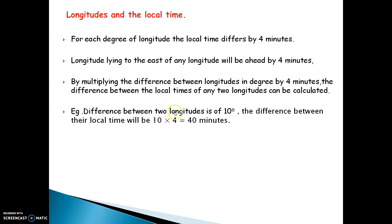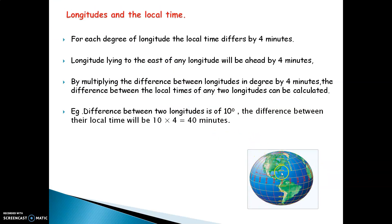Example: if the difference between two longitudes is 10 degrees, then the difference in local time will be 10 degrees multiplied by 4 minutes, which equals 40 minutes. So if any particular place lies 10 degrees apart in longitude, the time difference will be 40 minutes. You can see the prime meridian, also called the longest meridian on the earth, and the various longitudes whose distances differ by four minutes.